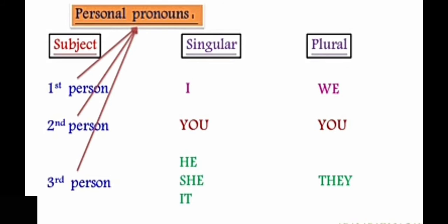Before starting the structure of the sentence, let us know the personal pronouns. There are seven basic pronouns in English grammar. They are I, we, you, he, she and it. You can be used singular as well as plural. We can classify them in three categories: first person, second person and third person.